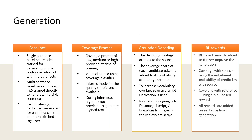Multiple generation methods were explored as part of our work. For a baseline approach, mT5 models trained on end-to-end generation were investigated. Two such models were used: one trained on single sentence generation and one trained on multiple sentence generation. In our fact-clustering approach, sentences are generated for each fact cluster separately and then stitched together. Next, coverage prompts were investigated. In this, a coverage prompt of low, medium, or high was provided at the time of training.